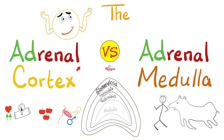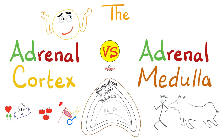The adrenal gland is made of cortex and medulla. The cortex is made of three sub-layers. We have the zona glomerulosa, which secretes aldosterone to raise your blood pressure. Then we have the zona fasciculata to secrete cortisol to raise your blood sugar. And then we have the zona reticularis, which secretes adrenal androgens.